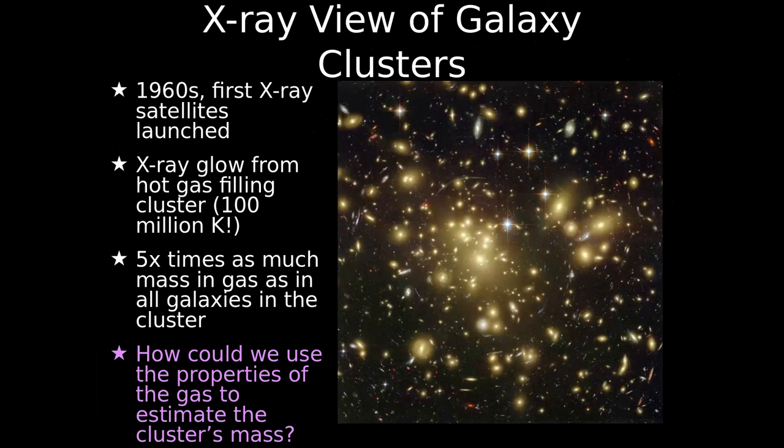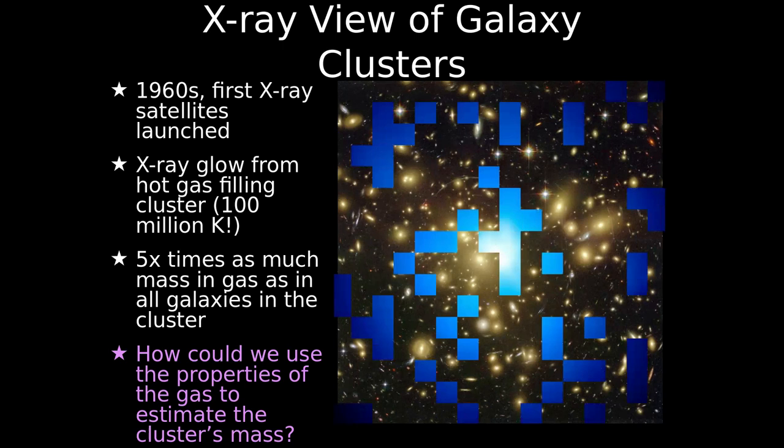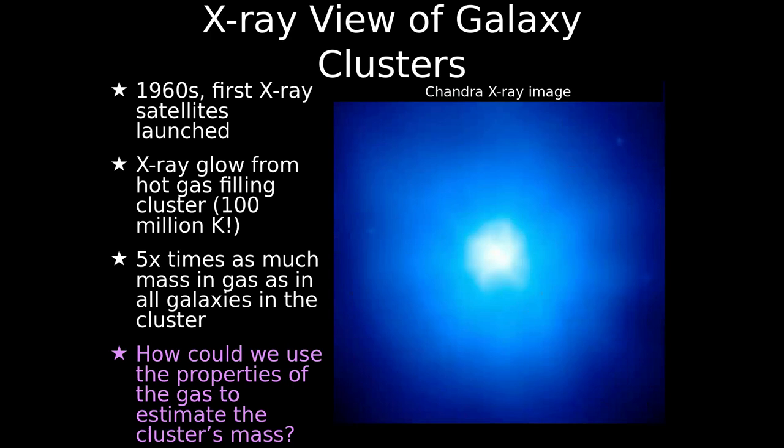In the 1960s, we launched satellites and kept seeing these large gas clouds — X-ray emission from hot gas within clusters. Here, this is the cluster shown before in optical so you can see the galaxies. If we change to the X-ray view, we've just got this cloud of gas, really hot — hundreds of millions of Kelvin. We can measure the mass of this gas from its temperature, assuming it's in hydrostatic equilibrium — a stable state. We found there's five times as much mass in the gas as in the galaxies. That accounts for some of the missing mass, but we still have a lot more.